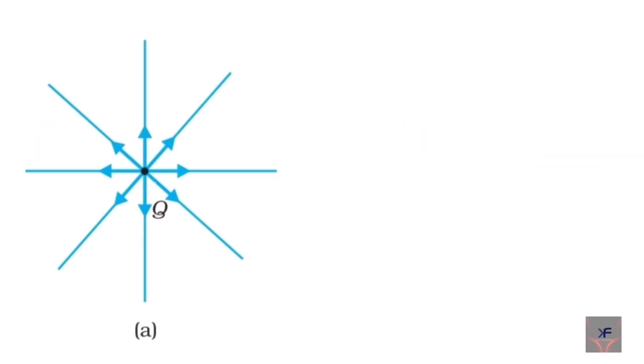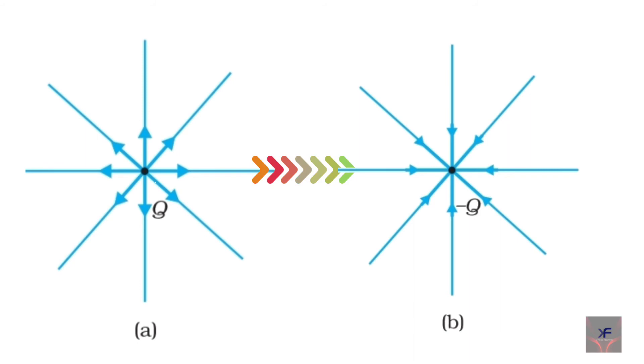Here the charge Q creates an electric field in the surrounding space around it within which its effect can be felt by another charge. It is called electric field, which is denoted as vector E.